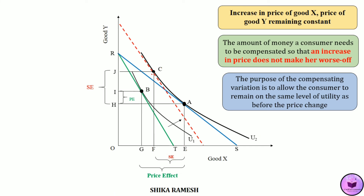The movement from point C to B shows the income effect. At point C the consumer is at a higher utility level, whereas at point B the consumer is at a lower utility level U1, reached due to the decrease in real income caused by the increase in the price of good X. Since real income has decreased, the consumer gives up FG amount of good X for IJ amount of good Y. This shows the income effect.